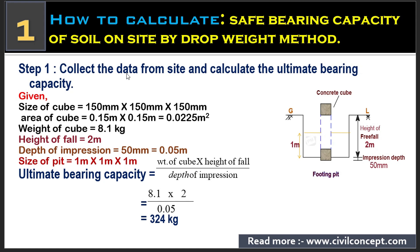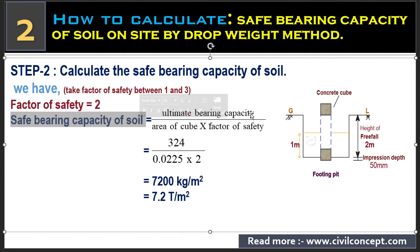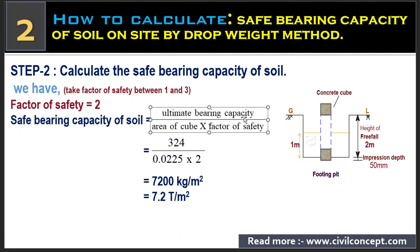Hello guys, welcome to Civil Concept. In this video I'm going to show you how to calculate the safe bearing capacity of the soil on site by the drop weight method. To calculate safe bearing capacity of the soil, we need the ultimate bearing capacity divided by area of cube, multiplied by factor of safety.